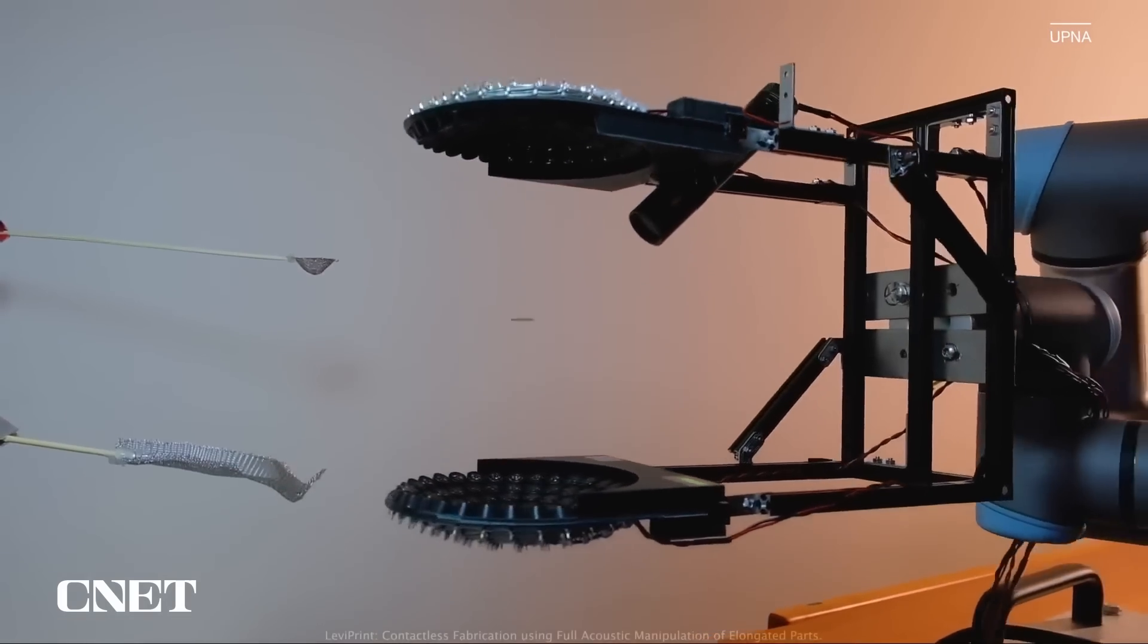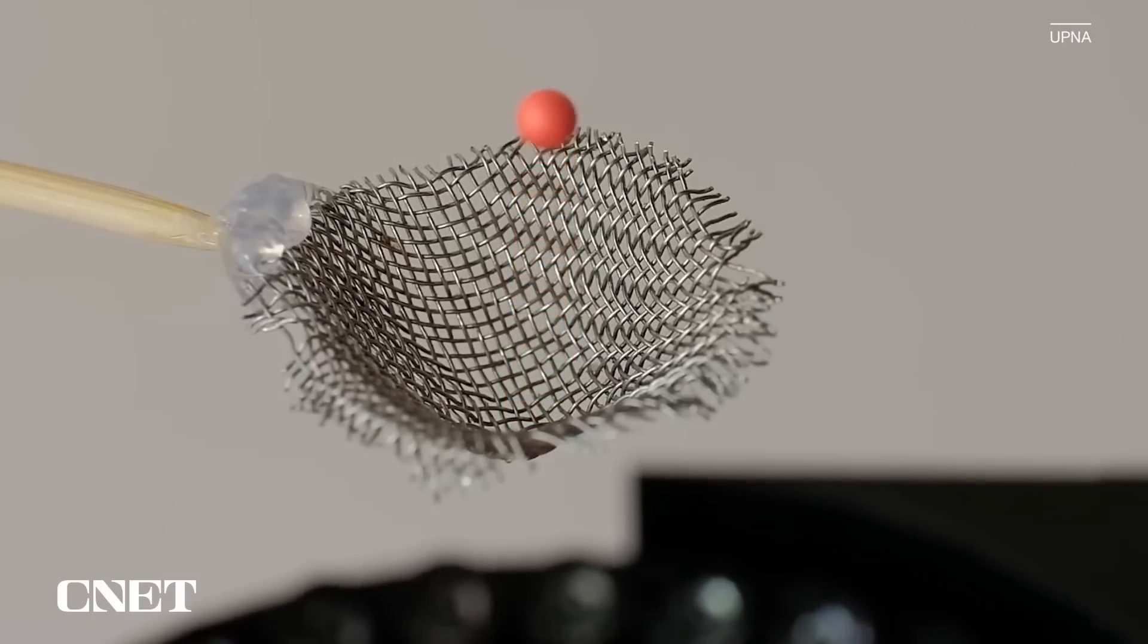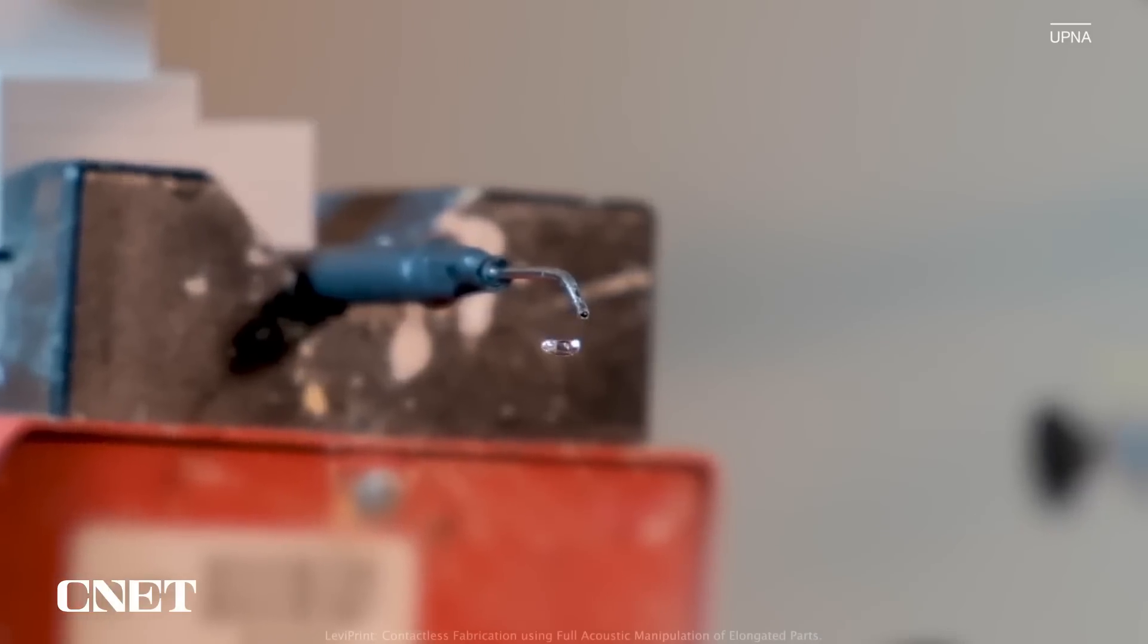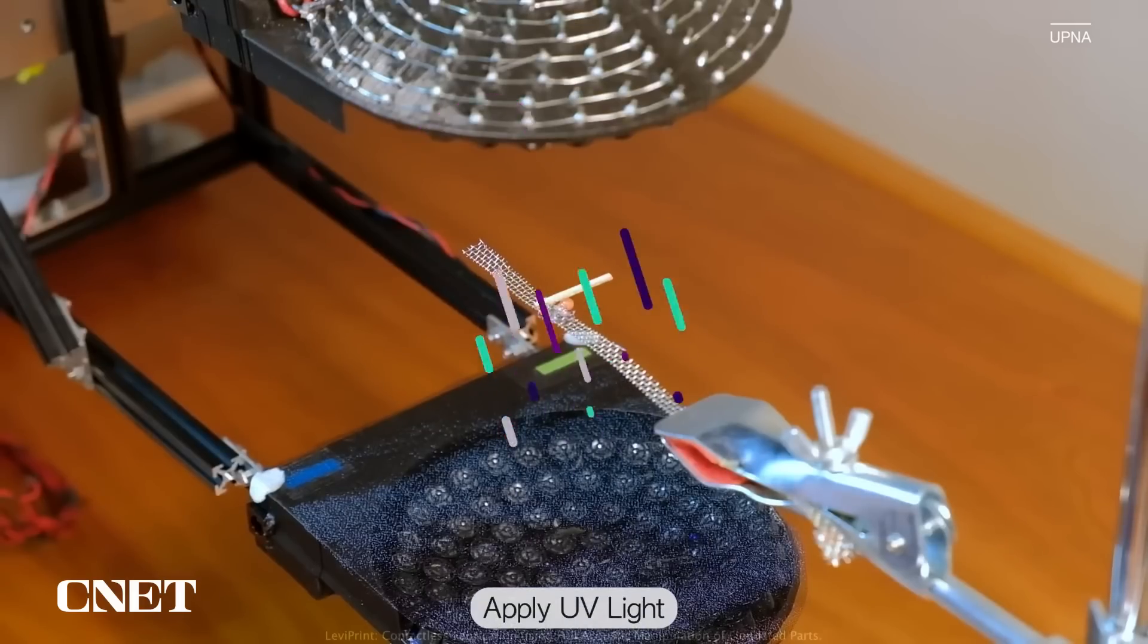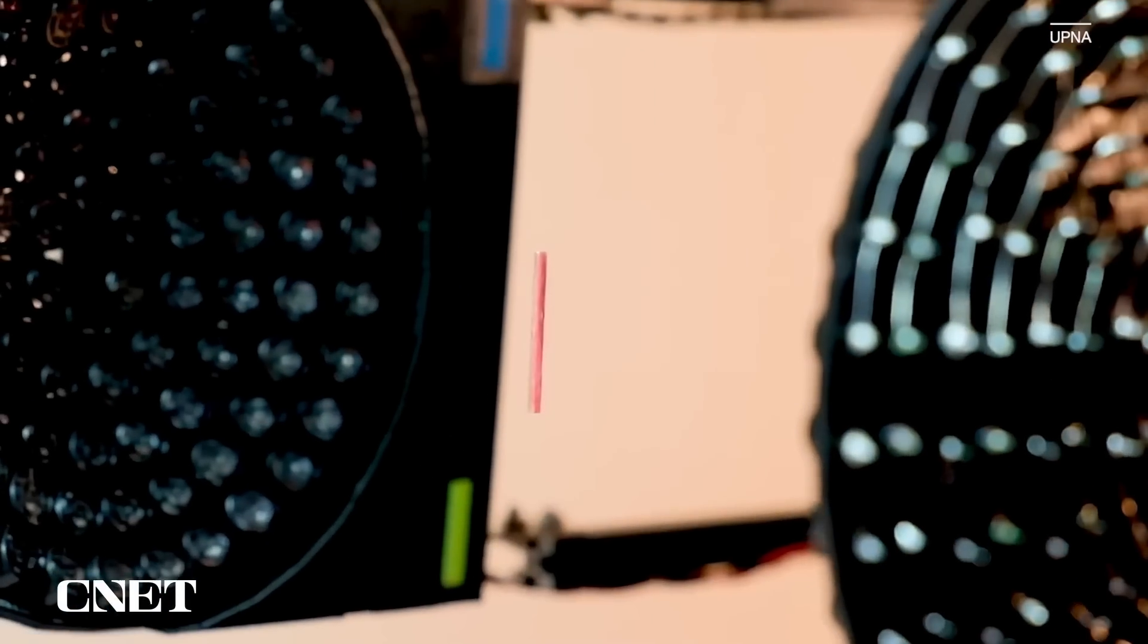LevyPrint is a system that can levitate and manipulate different objects to assemble complex pieces. These objects could be small spheres, but also droplets of glue that can be cured with ultraviolet light. Most importantly, we can levitate, move, and rotate sticks.